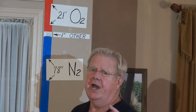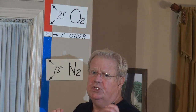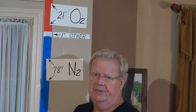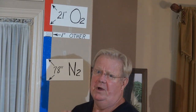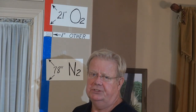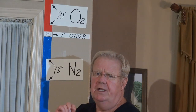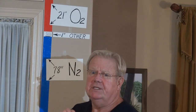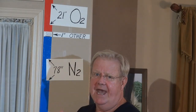Now, there's always been carbon dioxide in the atmosphere. There used to be three one-hundredths of an inch. Now there's four one-hundredths of an inch. So we've added one one-hundredth of an inch of carbon dioxide to the atmosphere.